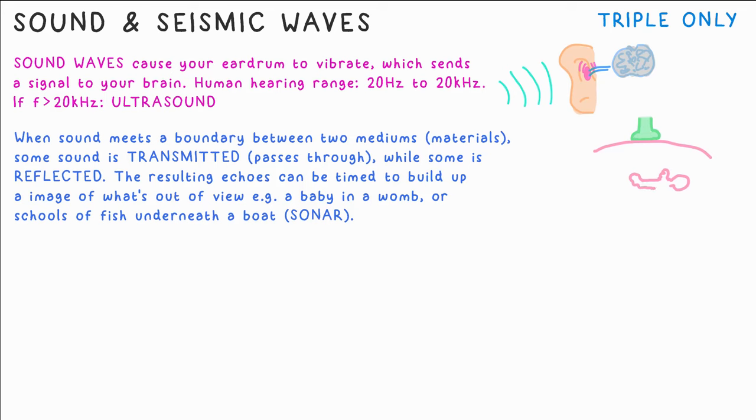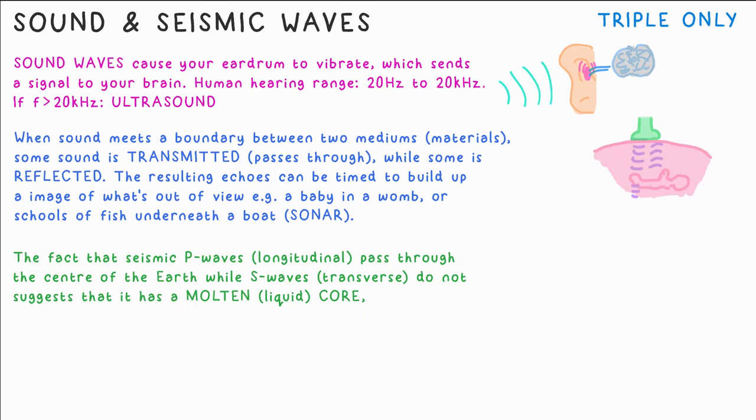Whenever sound reaches a boundary between two different mediums, materials, some of it goes through, we say it's transmitted, while some is reflected. This is the case when we emit ultrasound into a person's body, and a computer can time how long it takes to return off different layers, allowing it to build up an image of what's inside. This allows us to scan babies safely. We can also time sound waves in water to build up a picture of what's under a boat or around a submarine. This is called sonar.